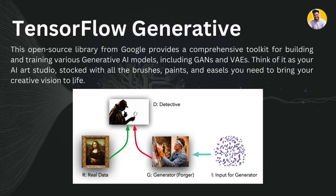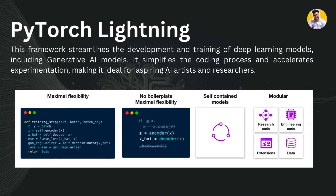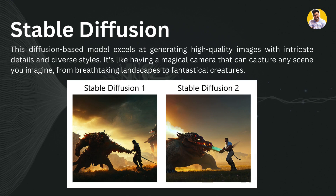There are also some advanced libraries worth noting. TensorFlow Generative is an open-source library from Google providing a comprehensive toolkit for building and training generative AI models, including GANs and VAEs. PyTorch Lightning is a framework that streamlines the development of deep learning models, including generative AI — it simplifies coding and accelerates experimentation using GPUs. Finally, Stable Diffusion excels at generating high-quality images with fine details and diverse styles — like having a magical camera that captures your fantasies and imagination.